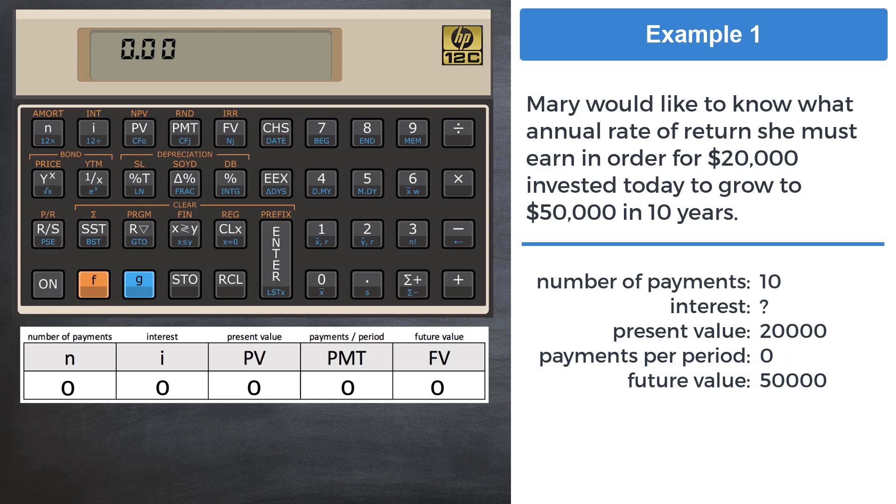Entering these into the HP 12c is done as follows. We will enter these into each respective register, and once that is done, the fifth register, in this case the interest, will yield the answer. Enter as follows: Press 10 on the keypad for 10, and then press the key marked N on the top row.